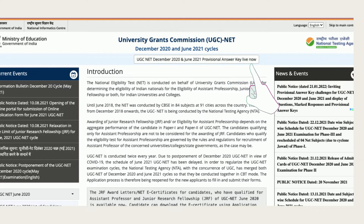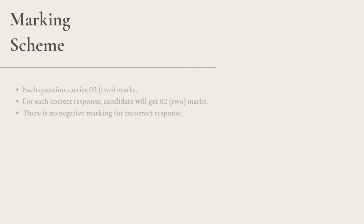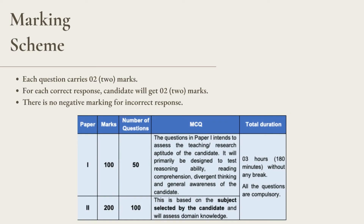Let's have a look at a few pointers which you should know before the result declaration. Let's have a quick look at the marking scheme. Under Paper 1, there were 50 questions, and in Paper 2, there were 100 questions. For each question, there are 2 marks allotted. So for every correct response, you will get 2 marks, and there is no negative marking for an incorrect response. I hope you have calculated your marks accordingly.